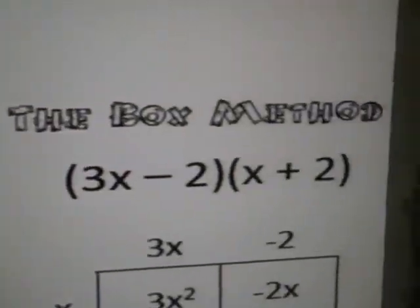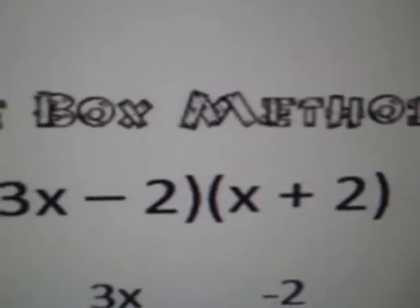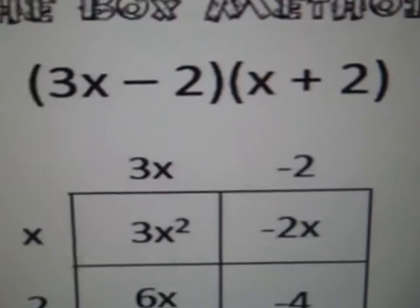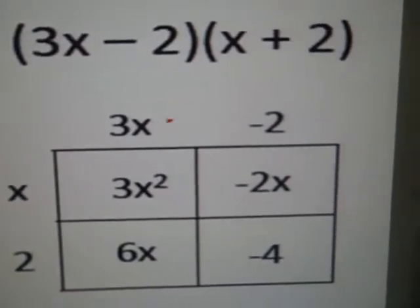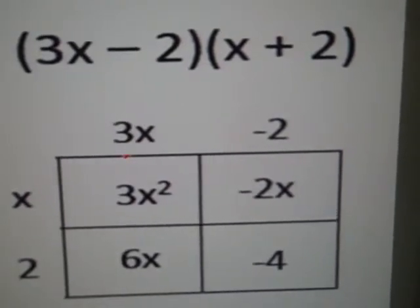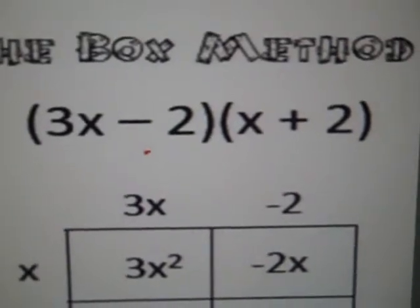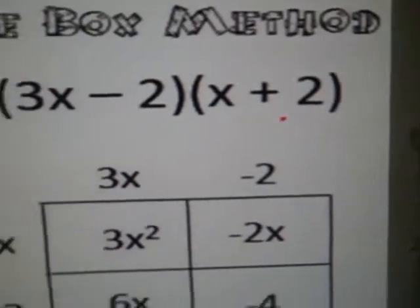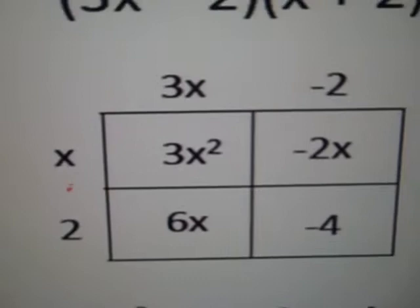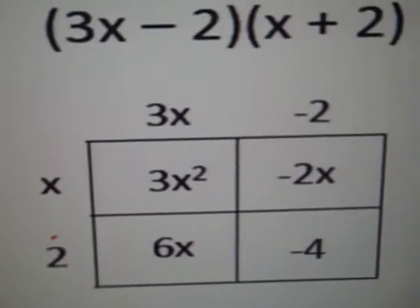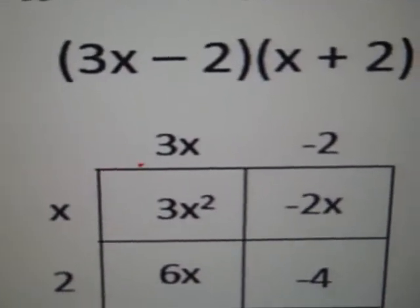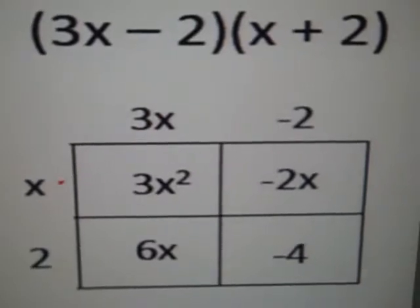Also, using the box method, taking the two binomials, setting them up like this where you're going to multiply terms that are diagonally across from each other. For example, I took 3x minus 2 and I put it here. I take x plus 2 and I put it here. And there's no plus here but it's a positive 2.